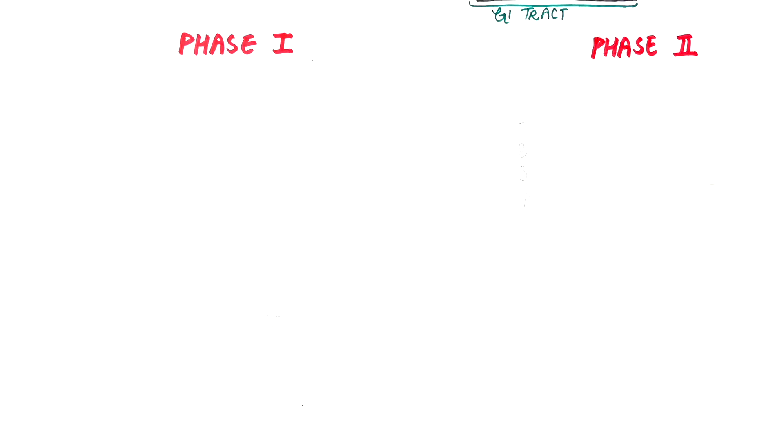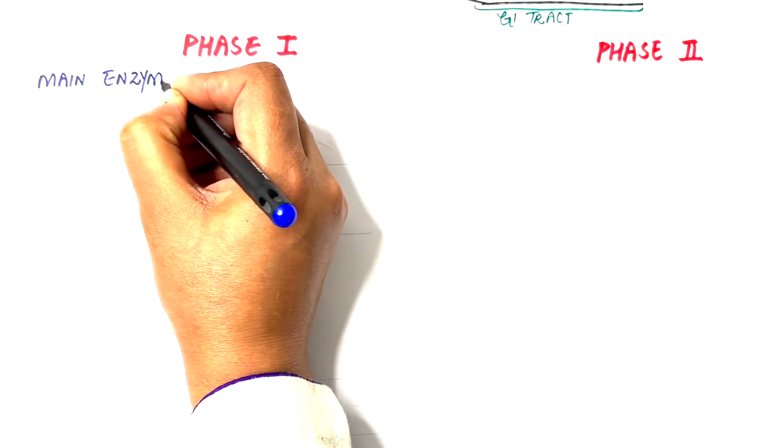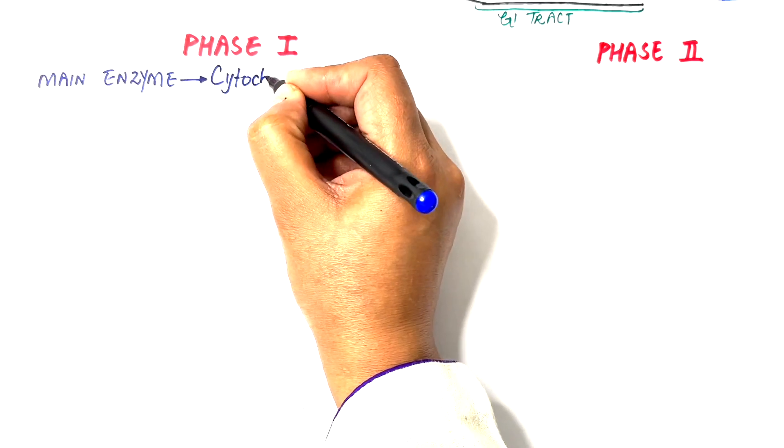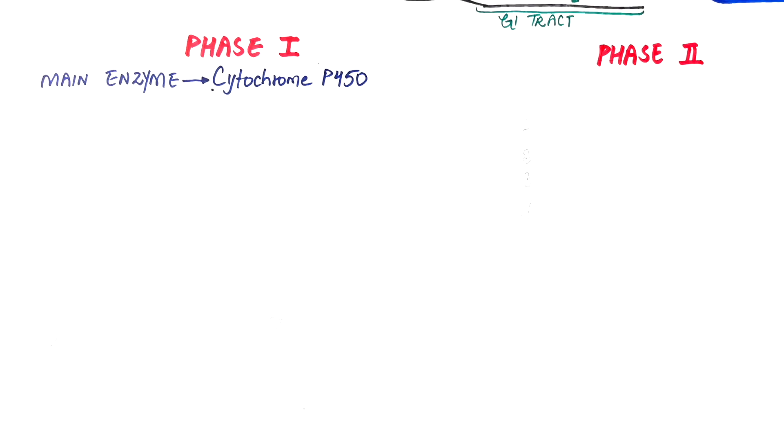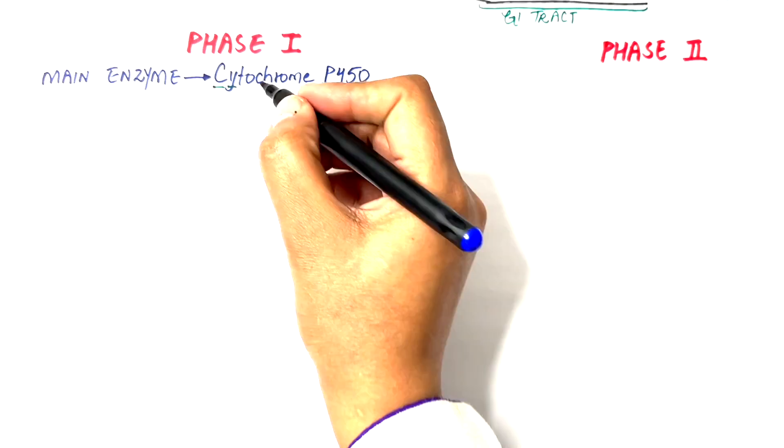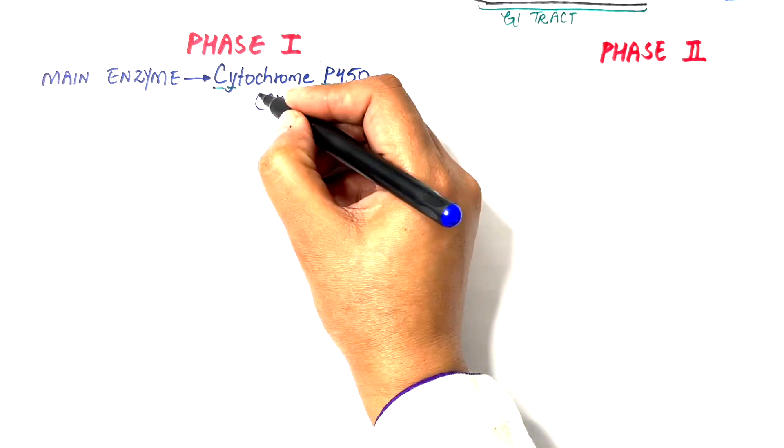After the lipophilic drug is taken by the hepatocytes, the main enzymatic system which comes into play is the cytochrome P450 enzyme system. The cytochrome P450 are heme-containing enzymes abbreviated as CYP450.